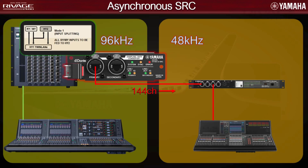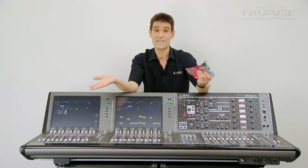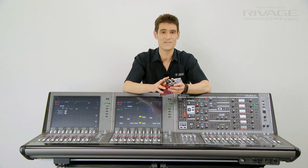Then you can use PM7 at front of house running at 96kHz using Silk with the hybrid mic preamps of the RPIO, and use the input split feature of HY slot 2 to send Dante at 48kHz to the CL5. A very neat and simple solution.